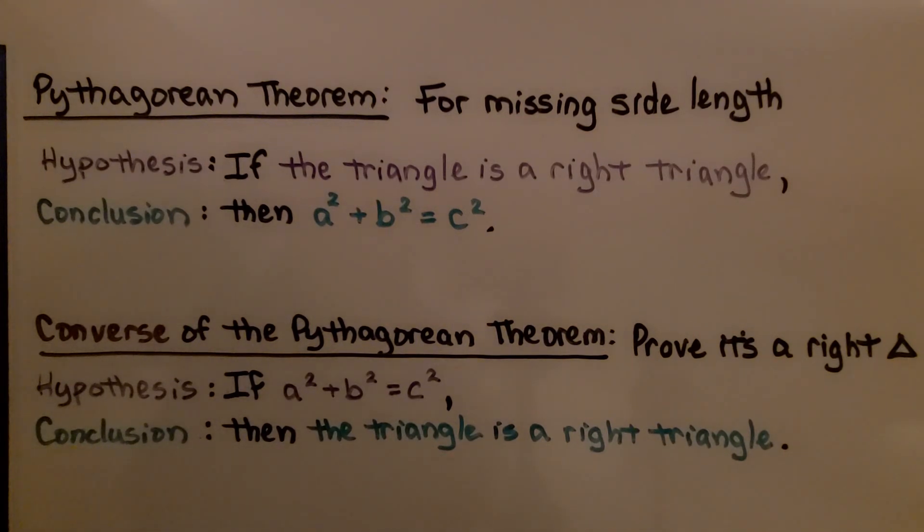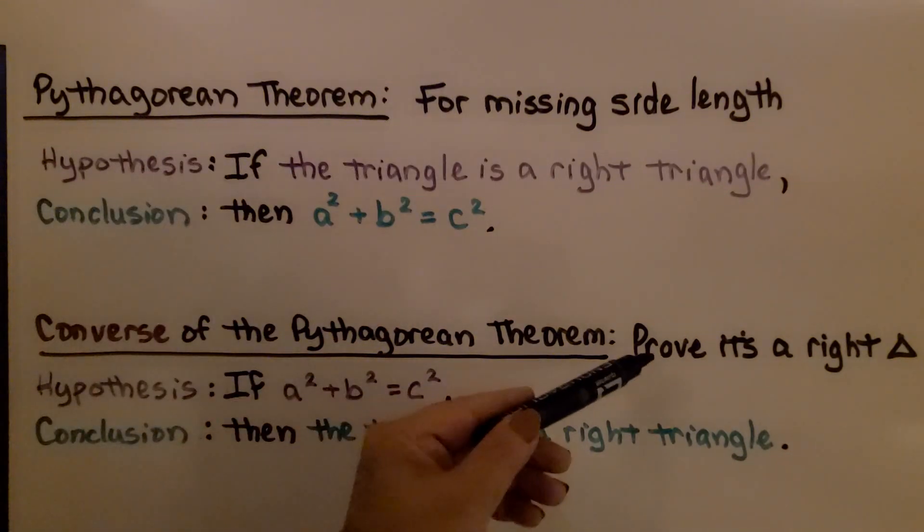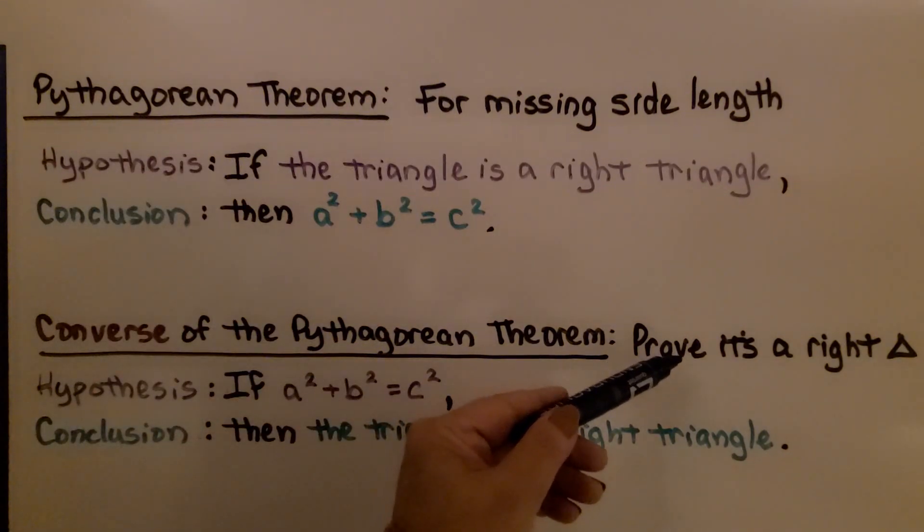We discussed this in the last video. We have the Pythagorean theorem and the converse of the Pythagorean theorem. The Pythagorean theorem is for missing side lengths, the converse is when you want to prove it's a right triangle, and you've got the three side lengths.